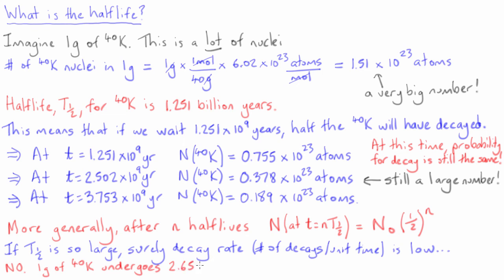In fact, our 1 gram of potassium will exhibit 2.65 million decays per second. At first glance, this seems like a very large number of decays, but you have to remember that since Avogadro's number is so huge, 2.65 million decays per second is only the tiniest fraction of the total number of potassium-40 atoms that are present.